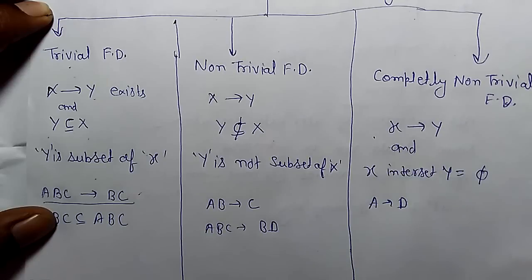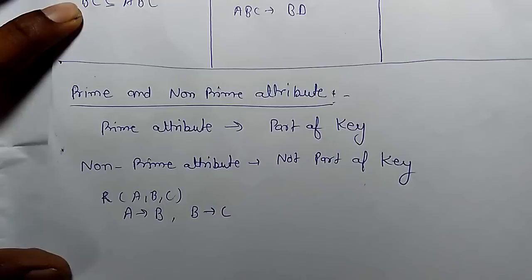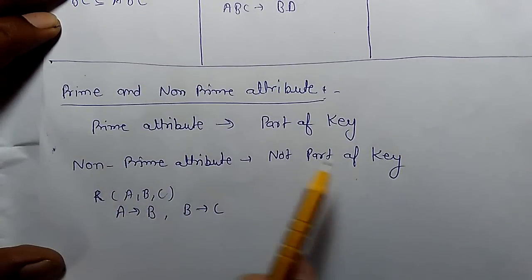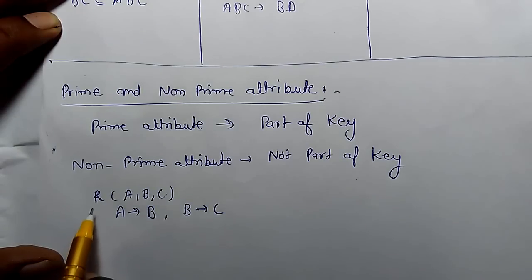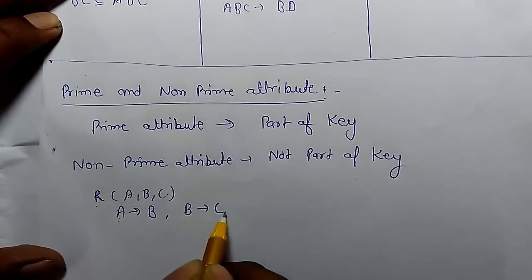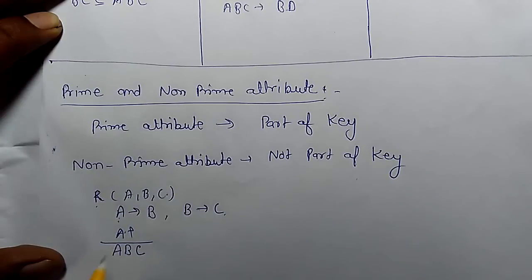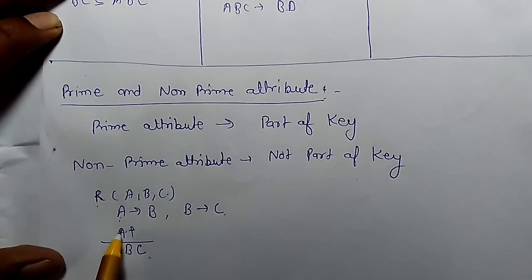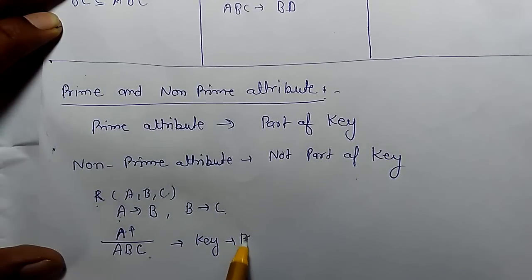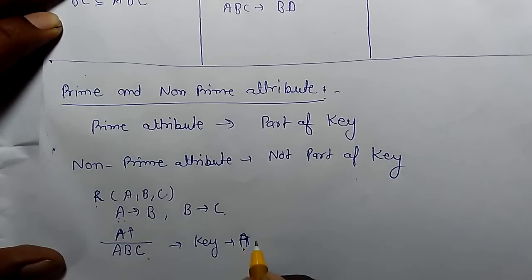Some other important points: prime and non-prime attributes, which will be used in normal forms. Prime attributes are part of a key. For example, if relational schema R has three attributes A, B, C and the functional dependencies are A determines B and B determines C, then the closure of A gives A, B, and C by reflexivity, transitivity. So A determines ABC, meaning A is the key — a candidate key or primary key — so A is a prime attribute.